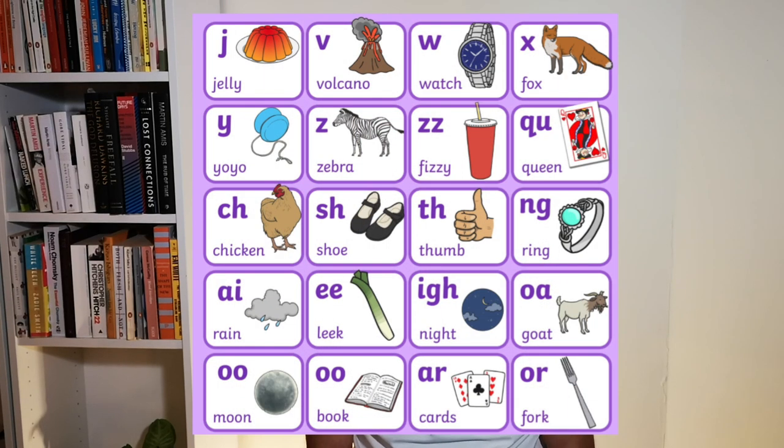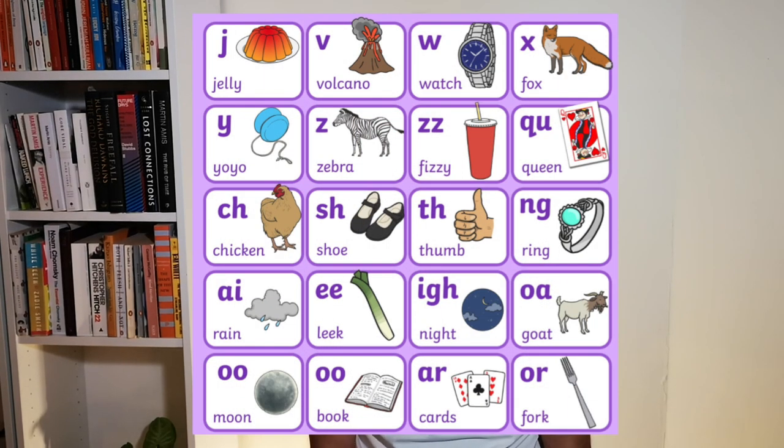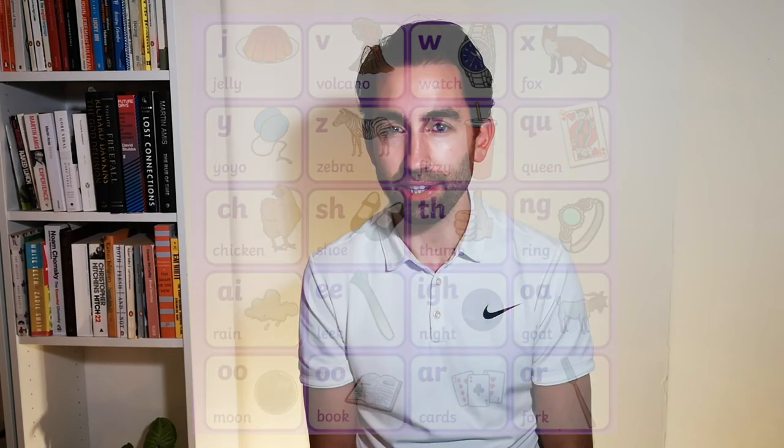So how do we as linguists begin to talk about sounds? Your first exposure to sounds was probably in the form of phonics or the alphabet. When you first learned to read at about three or four years old, you will have learned that the sounds of the language correlate to particular shapes — so for example, the letter A for apple. However, things are not that simple in the English language. Indeed, the English spelling system is notorious for how poor a guide it is for how words actually sound.